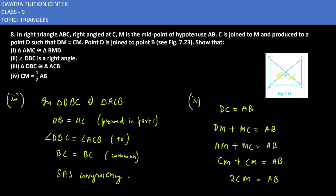I can directly write DC equals DM plus MC. Since DM equals MC, we have DC equals MC plus MC, which is 2CM. Therefore 2CM equals AB, so CM equals half of AB. This is the answer for question eight. Now we'll move to the next exercise in the next video, which is 7.2.